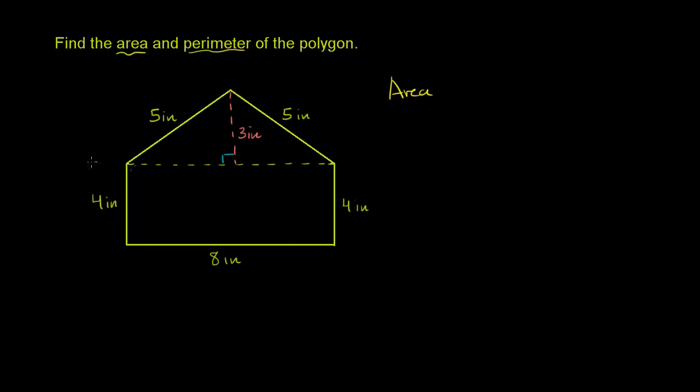First, you have this part that's kind of rectangular, or it is rectangular, this part right over here. And that area is pretty straightforward. It's just going to be base times height. So area is going to be 8 times 4 for the rectangular part.